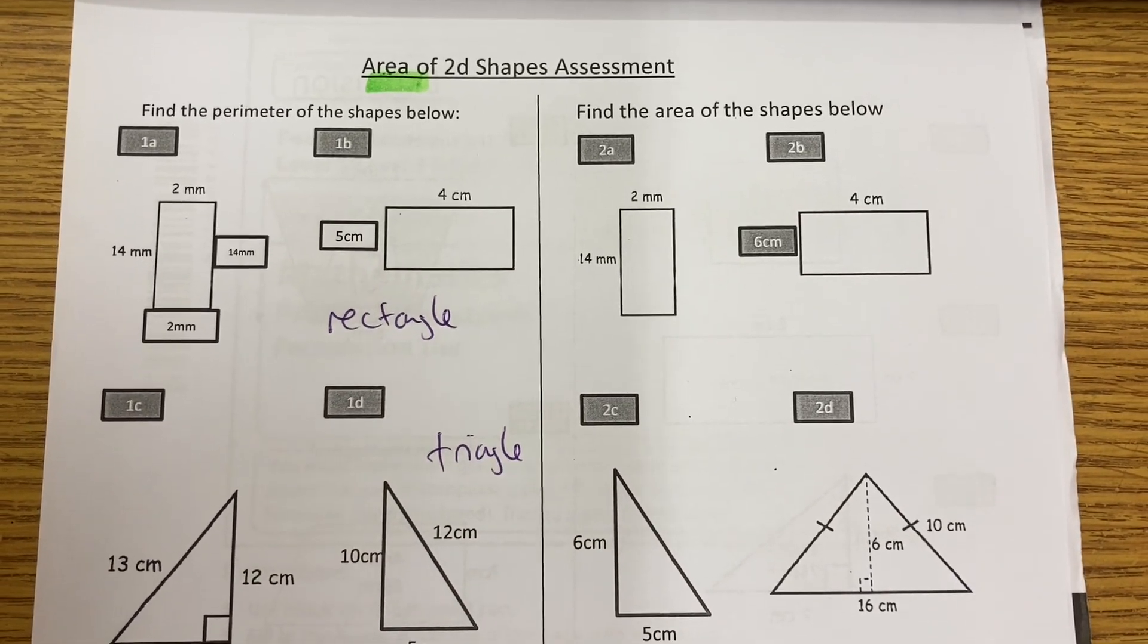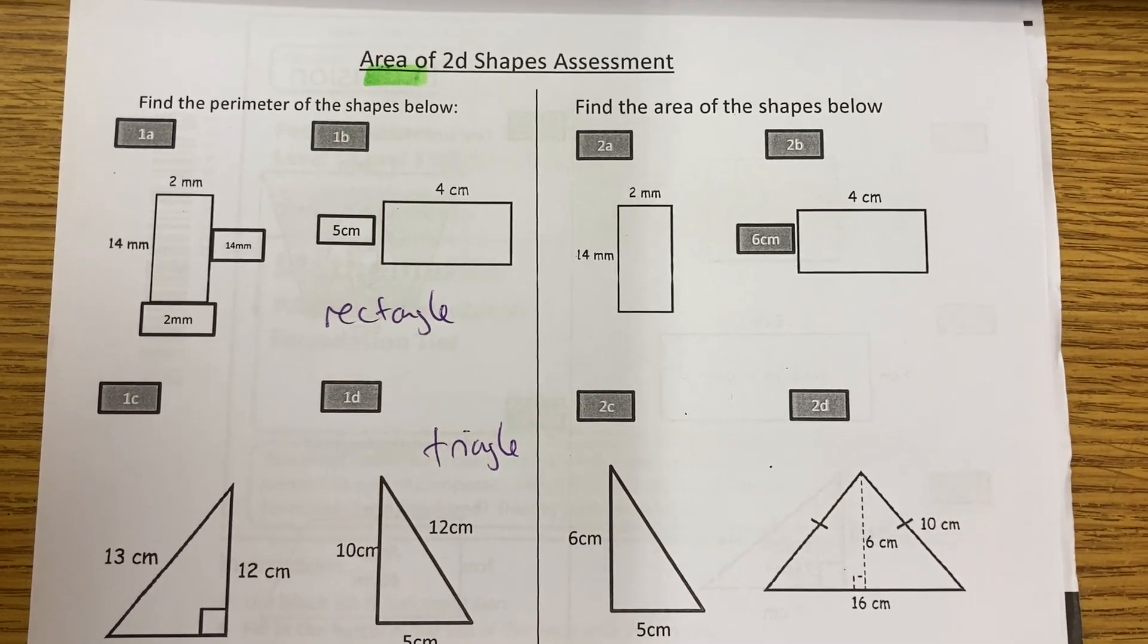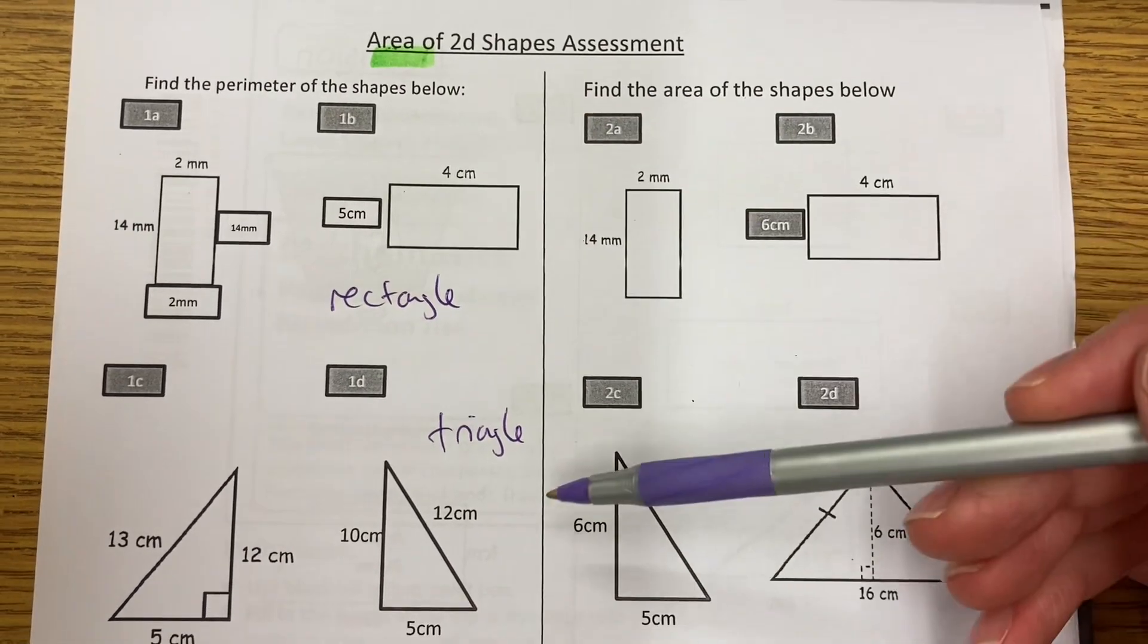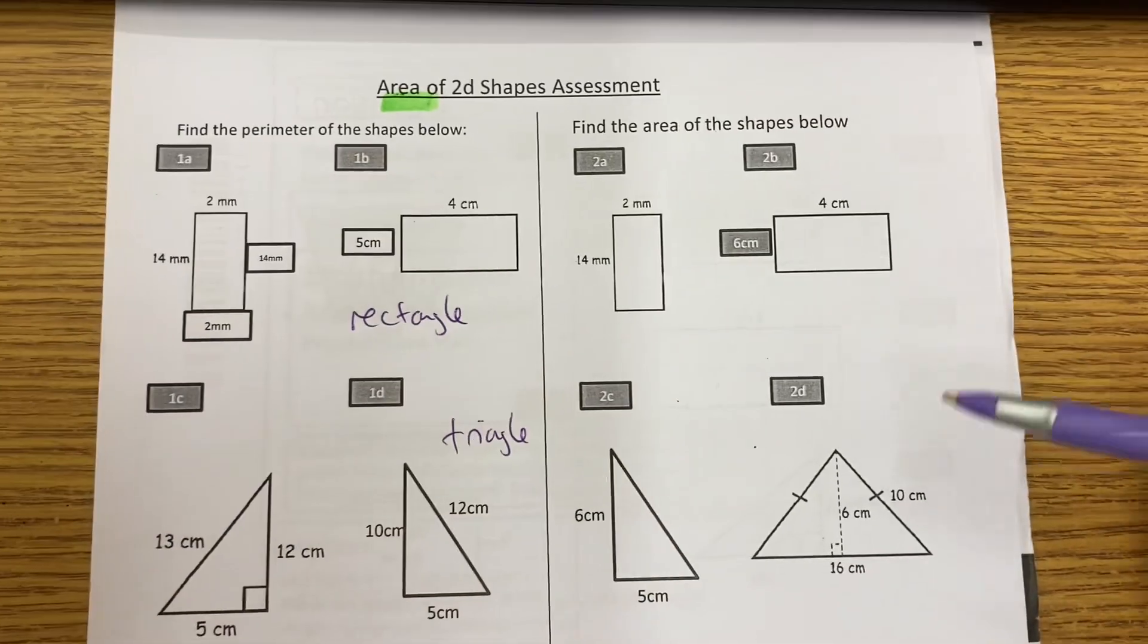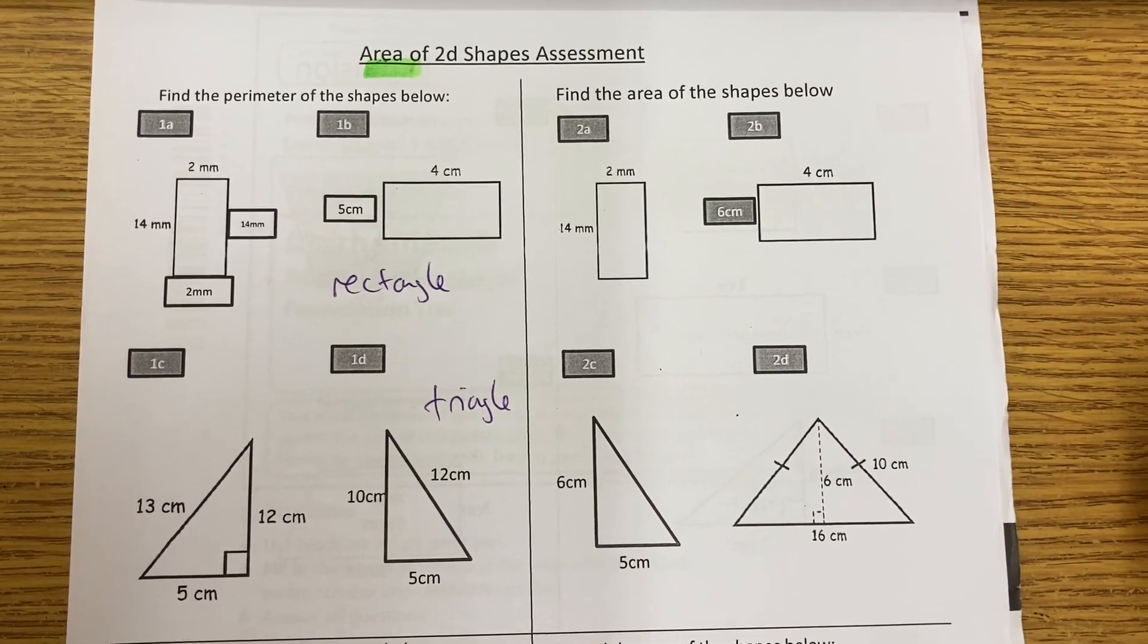Hello, welcome to Martin Maths. We're going to do some area of 2D shapes here: rectangles, triangles, parallelograms, squares, and trapeziums. There's a few questions on the sheet, but I'm going to do one or two examples of each.